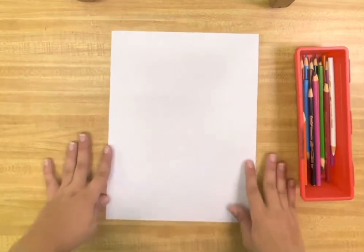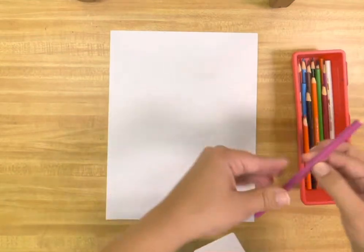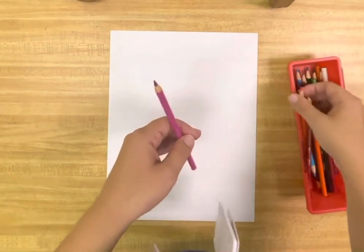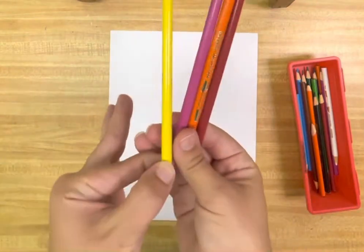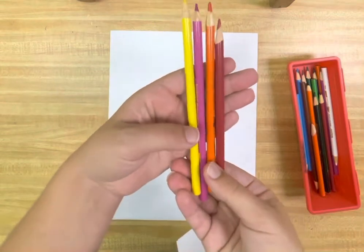So we're going to be talking about warm and cool colors. Some examples of warm colors: we've got red, orange, pink, and yellow are all warm colors.